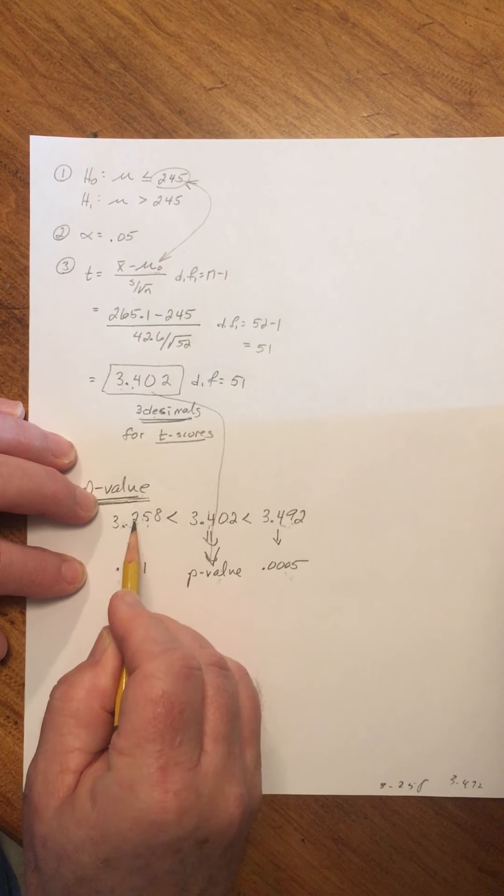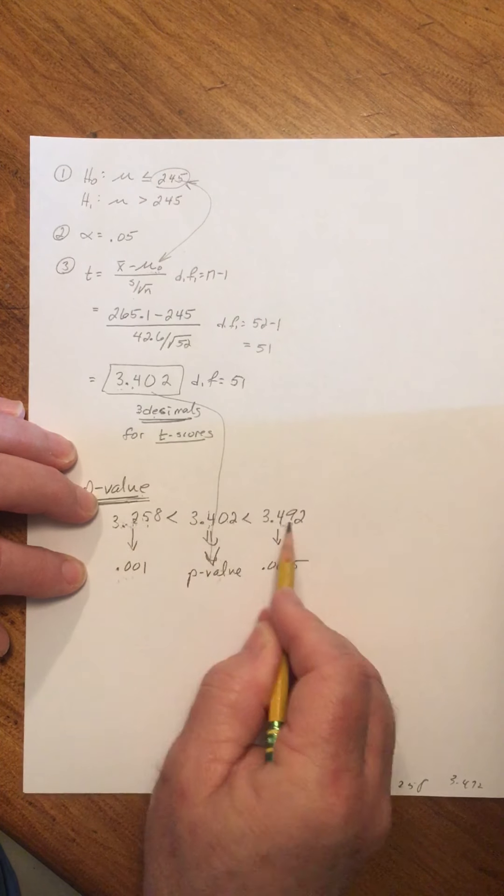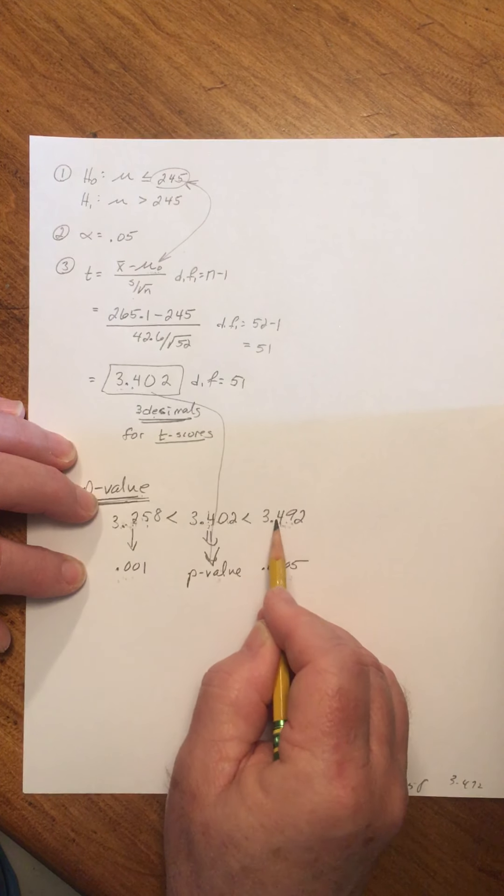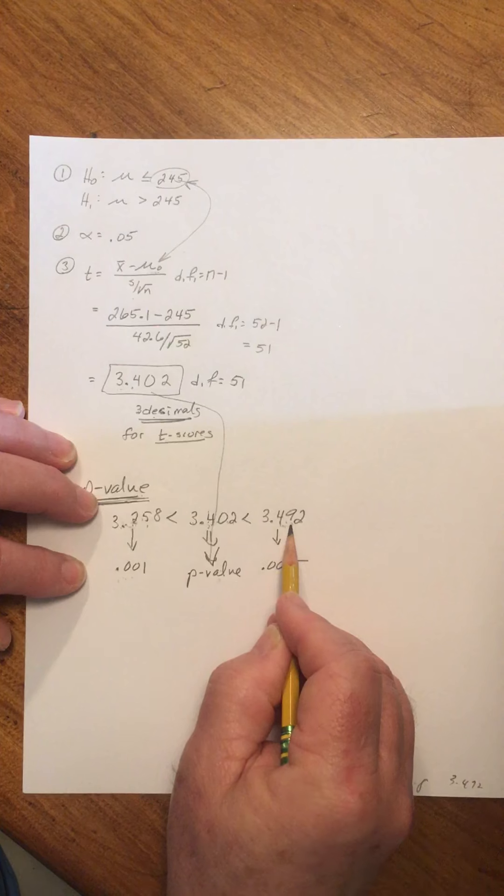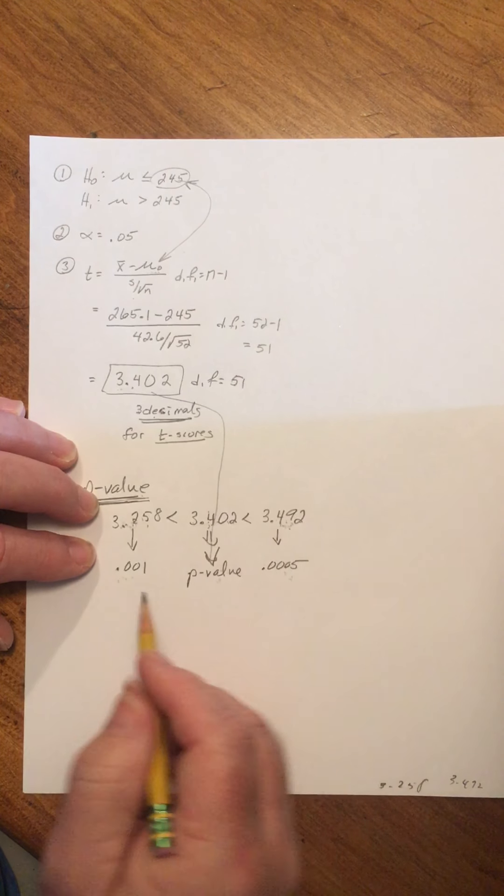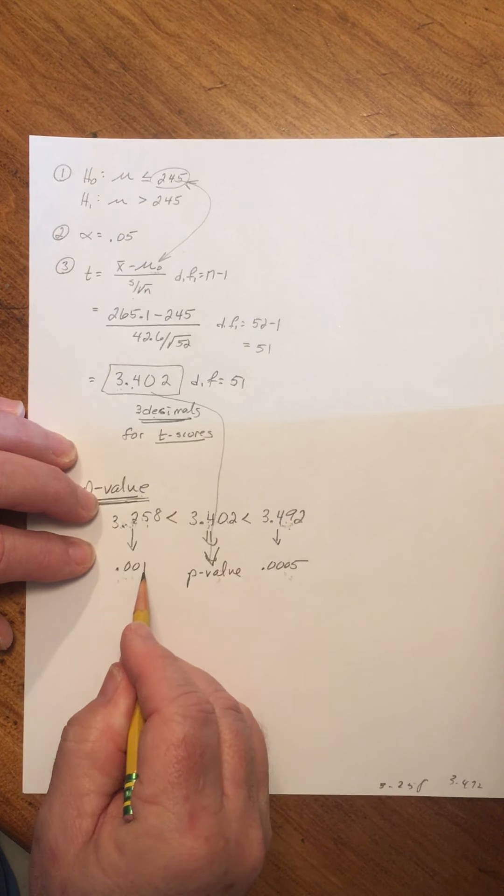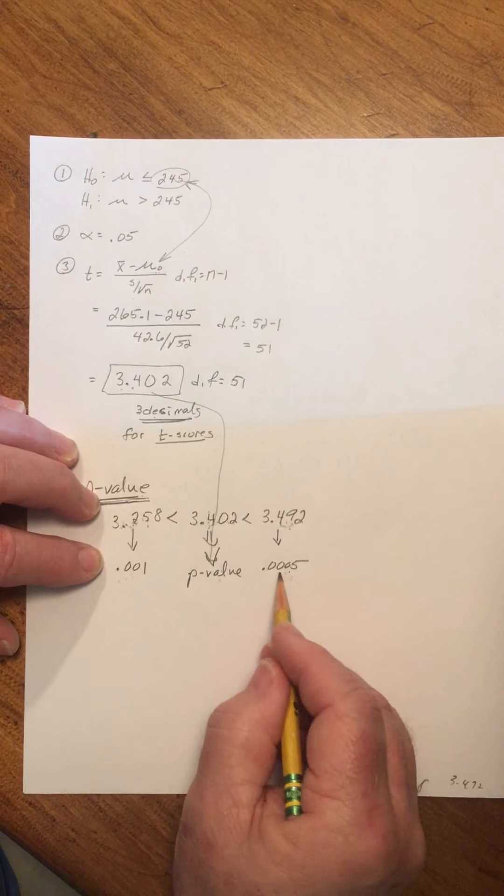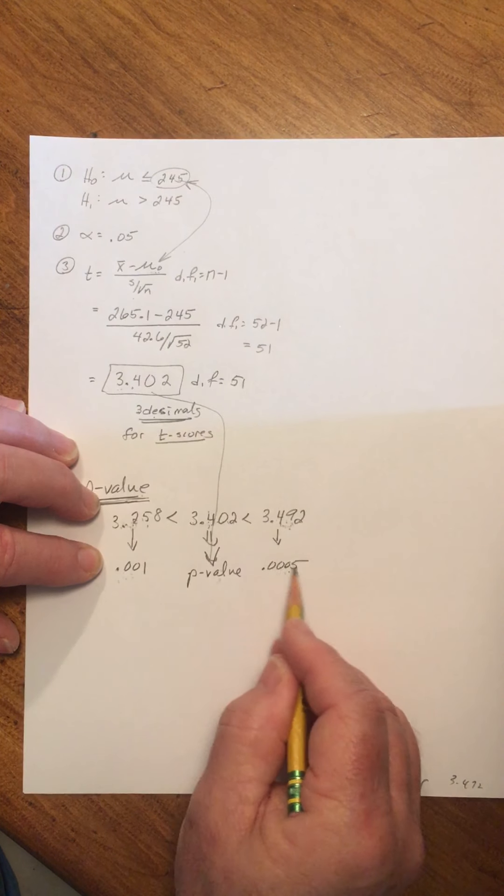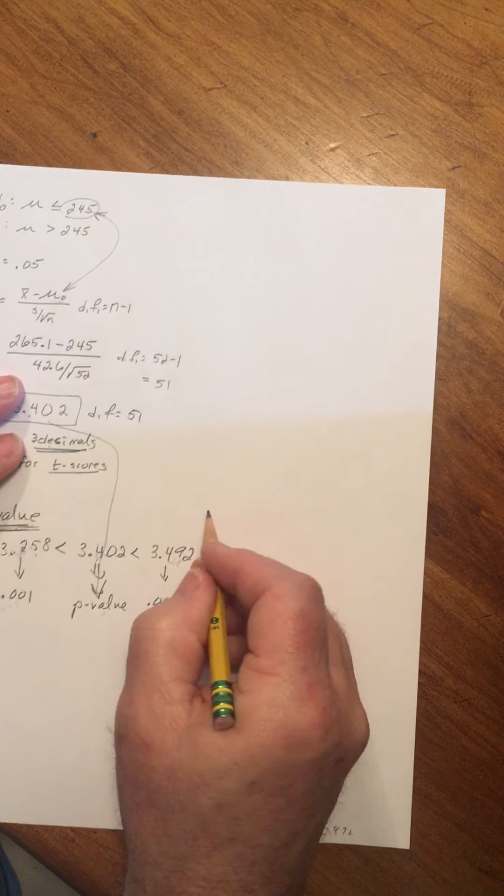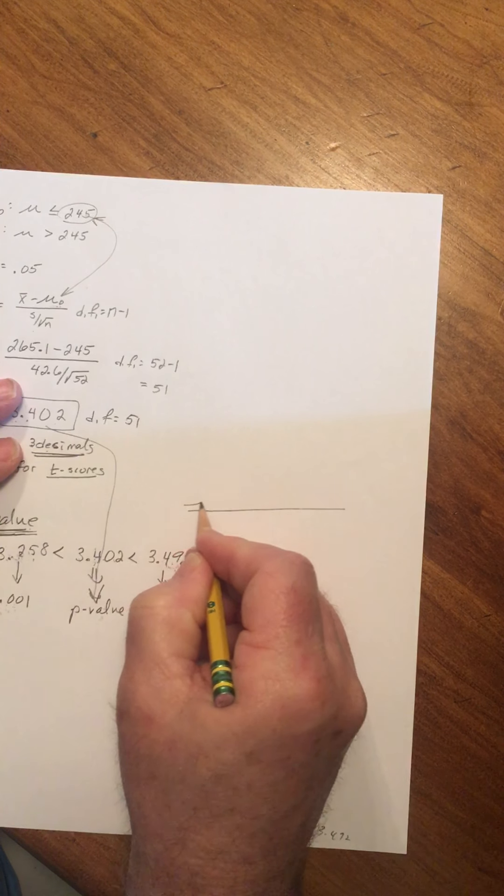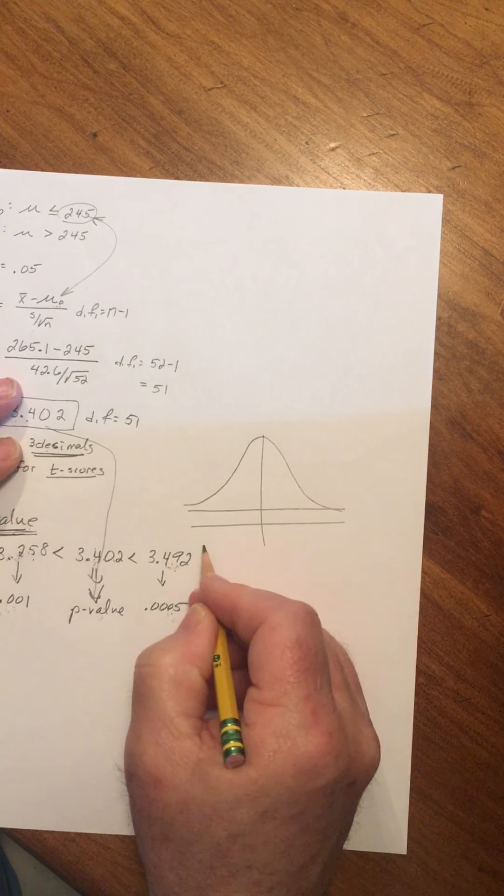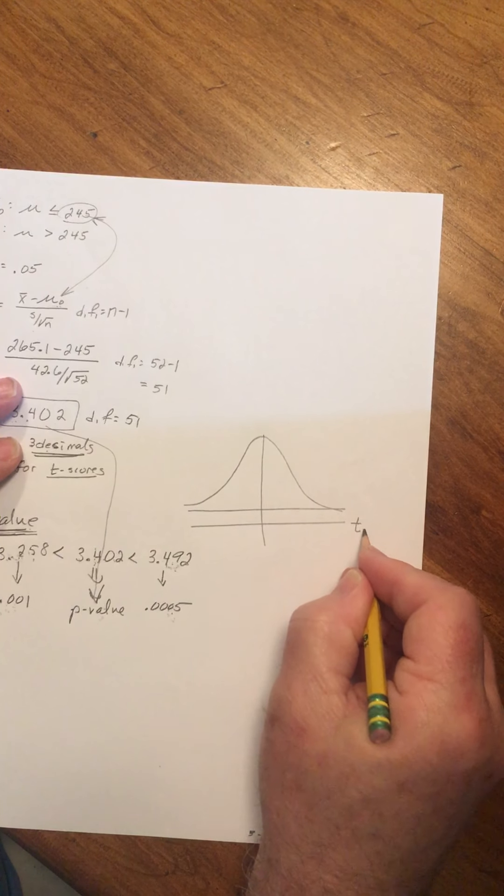Now one other small detail is this. 3.258 is the smallest in this row. 3.402 is the middle size in this row. 3.492 is the largest in this row. But .001 is the largest number in this row. .0005 is the smallest number. This is a way to think of it.